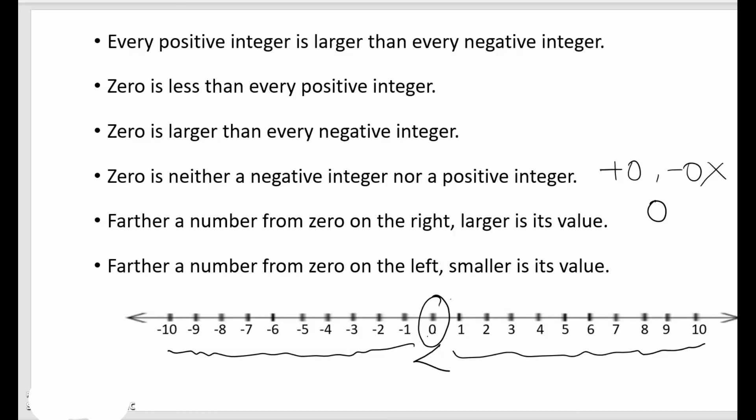The farther a number is from 0 on the right, the larger its value — as we move right, the value increases (e.g., 3, then 7, then 10). The opposite is true moving left: the value decreases (e.g., minus 2, then minus 6, so minus 2 is greater than minus 6). I hope this concept is clear. In the next lesson we shall learn how to add integers on a number line.